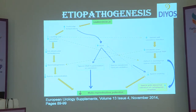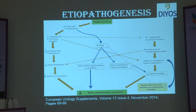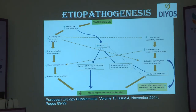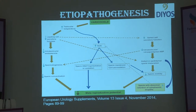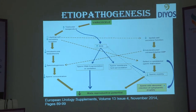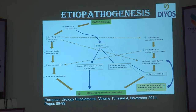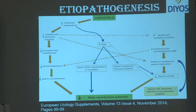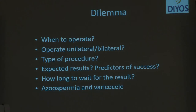What varicocele does is result in increased testicular temperature, and the pathology leads to decreased Leydig cell secretory function, decreased intratesticular testosterone, decreased spermatogenesis, decreased sperm concentrations, increased ROS activity which causes DNA damage, and decreased Sertoli cell function, leading to reduced sperm motility. So when you are looking at reduced sperm concentration, sperm motility, and increased DNA fragmentation, we are going to see a reduction in the male reproductive potential of this patient.